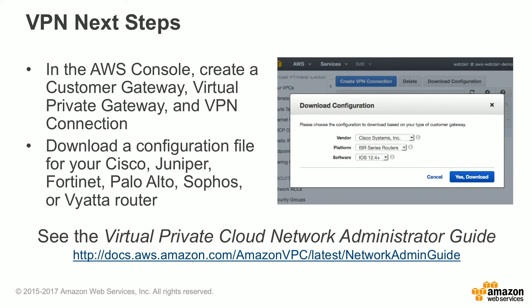Next steps for a VPN connection: go to the AWS console, create a customer gateway, a virtual private gateway, and then a VPN connection. Download the configuration, make the required changes in the file, and apply it to your firewall.